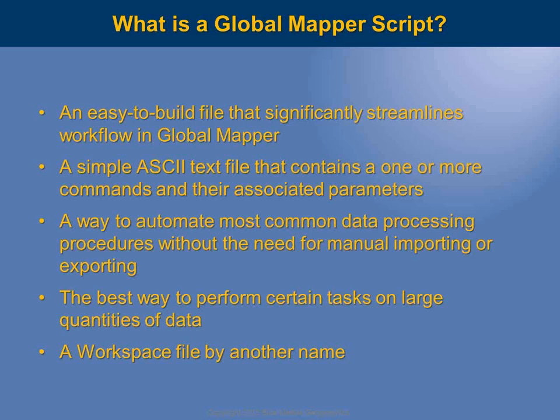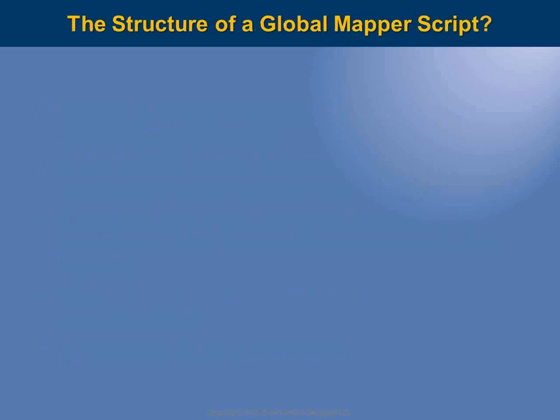Let's talk about the structure of a script. A script file is a text file. The suffix on a Global Mapper script is .gms — Global Mapper Script — which is how Global Mapper knows it is a script file. You can create a script file in any text editor with a .txt suffix, then either manually change it to .gms or define the suffix during export from your text editor.